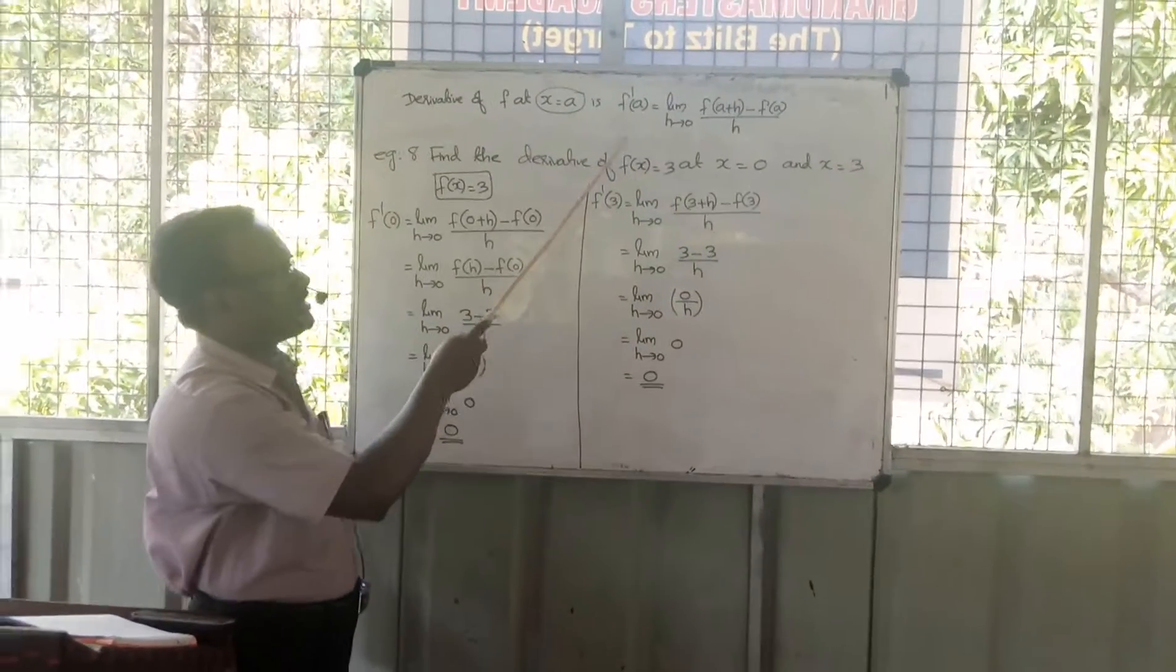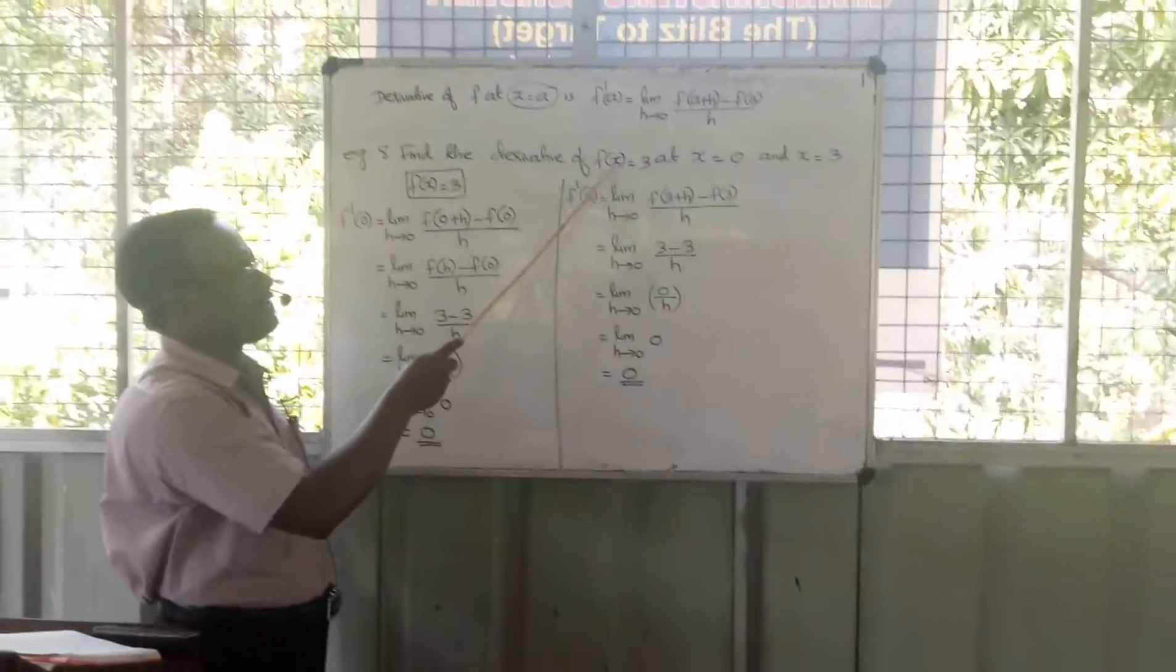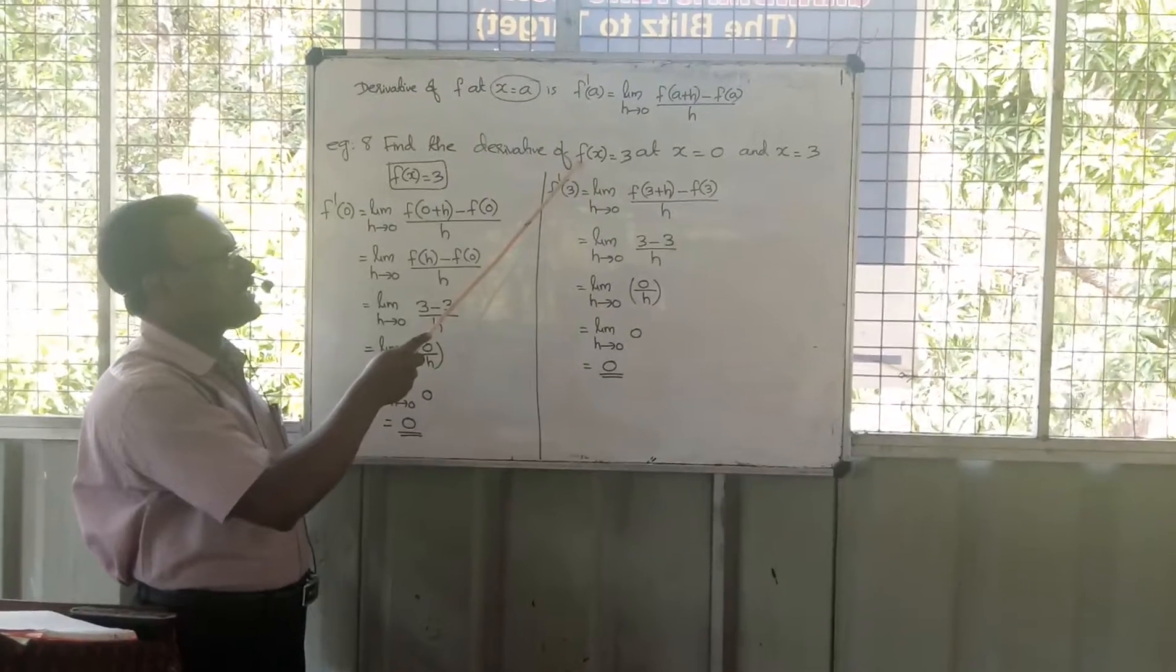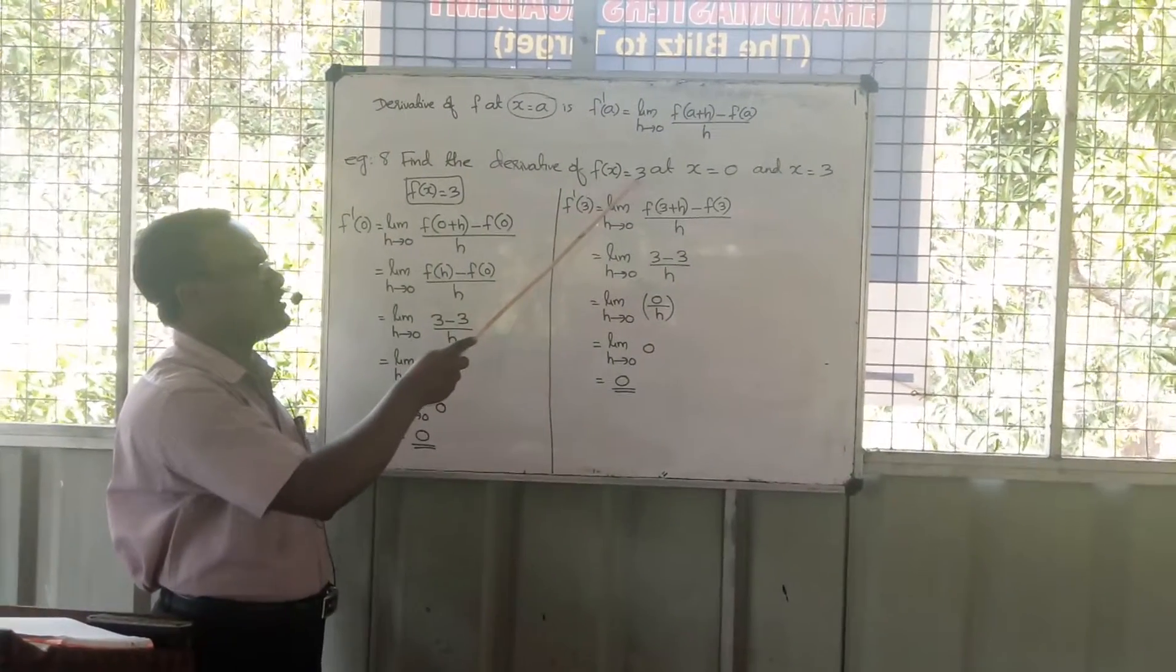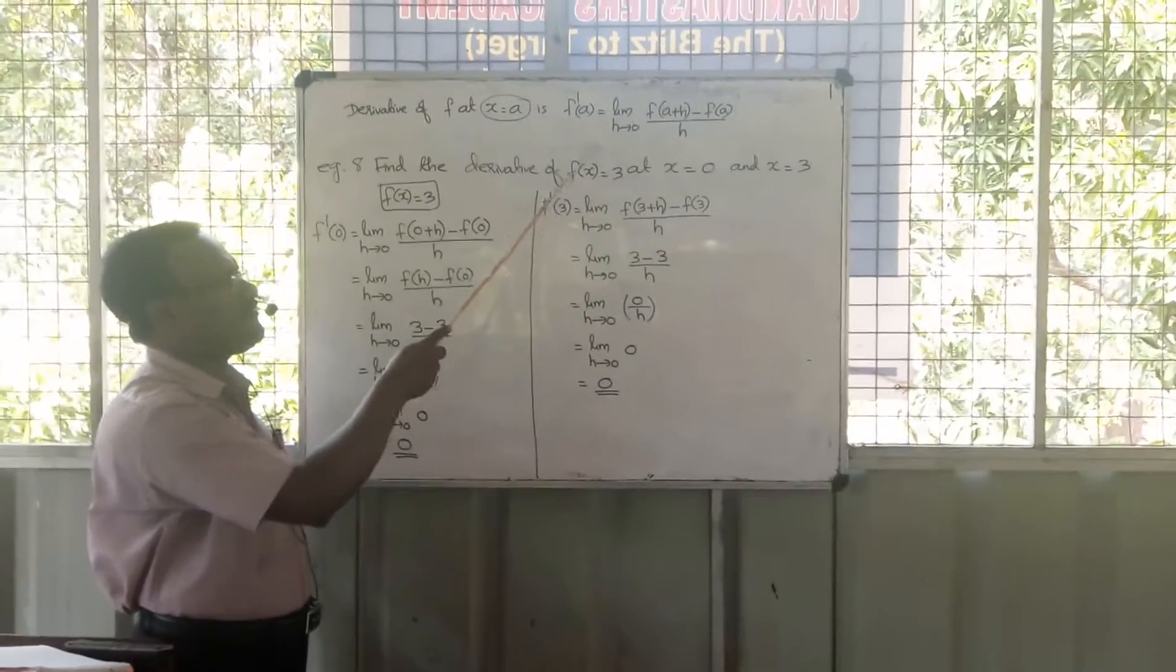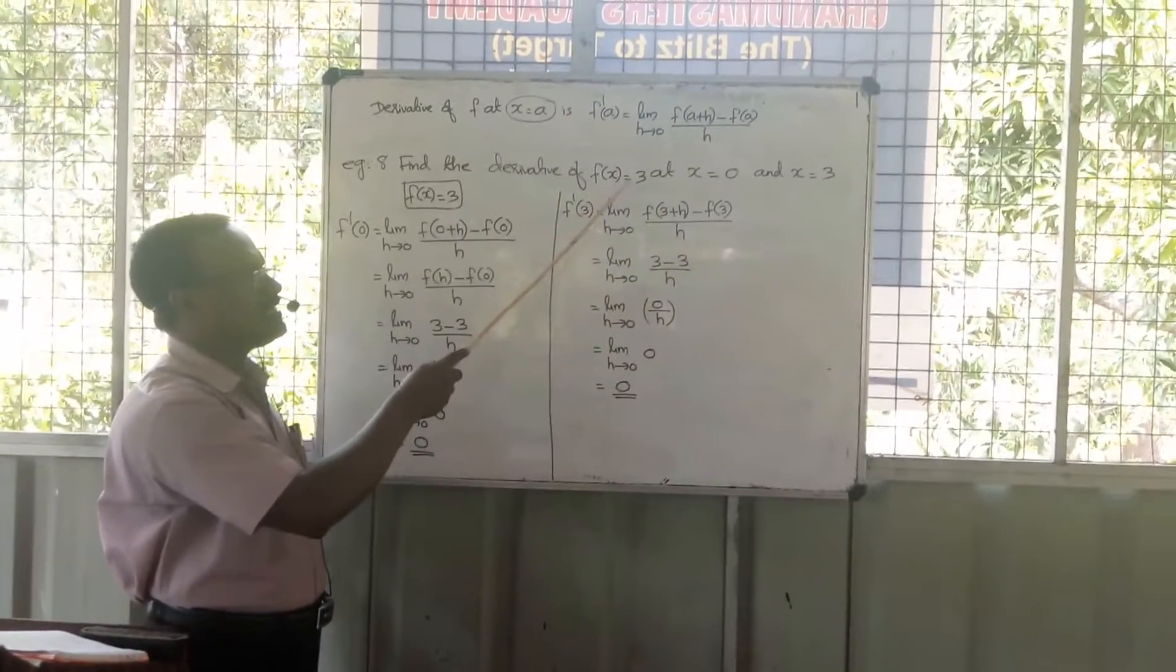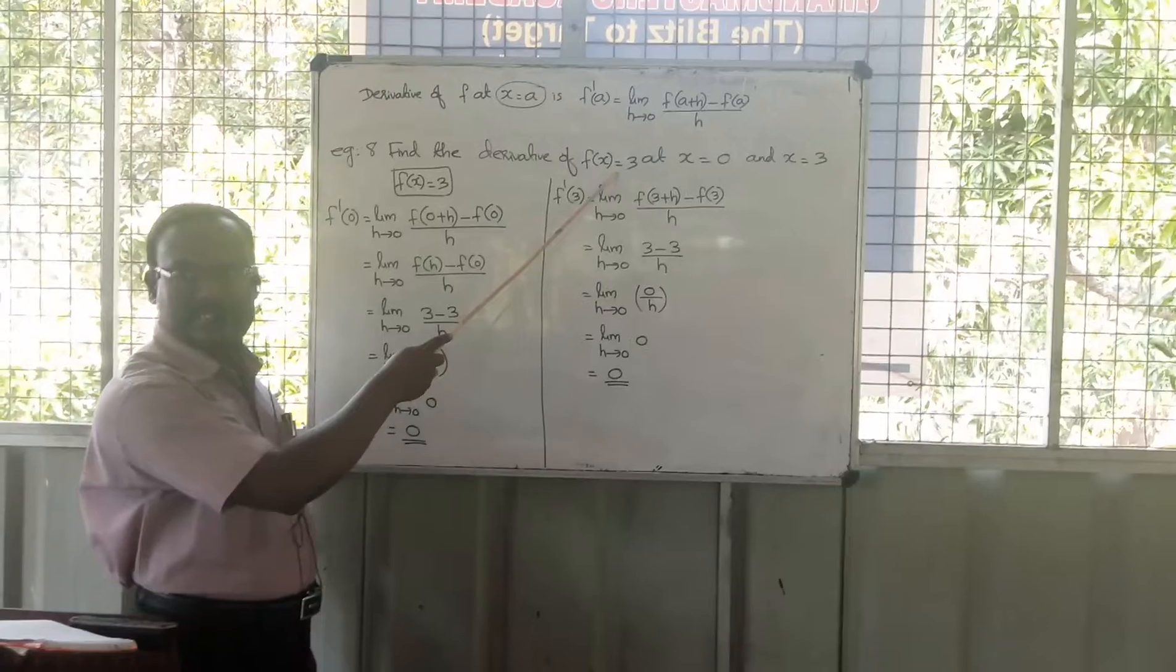f(x) = 3 is the function. For any number x, when you apply the function f, the answer is always 3. So f(x) = 3 is a constant function.